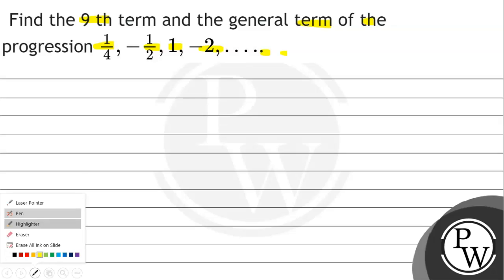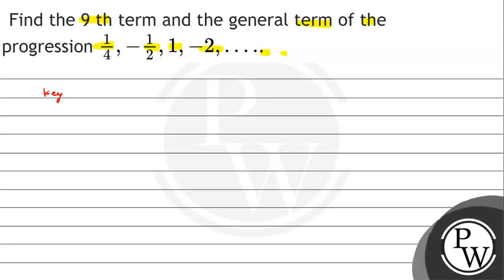So our key concept will remain: how to find if this is an AP or GP. If we talk about arithmetic progression, the common difference remains the same — t2 minus t1 equal to t3 minus t2, and so on.